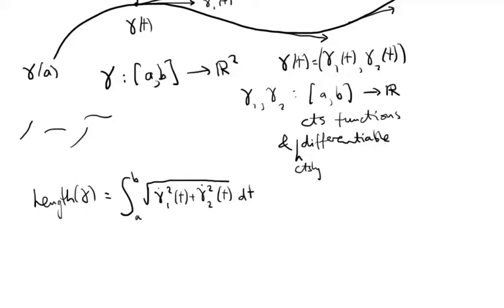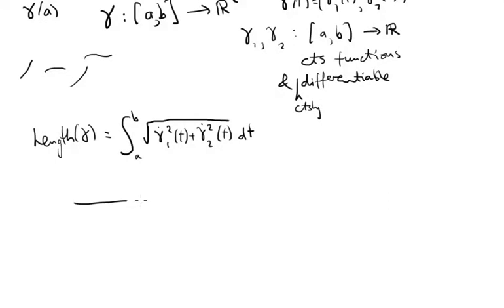And the way to see this is to split your interval up into n equal chunks, n pieces. Each chunk has length b minus a over n, b minus a being the length of the whole interval. So that will go to some decomposition of the path into segments.